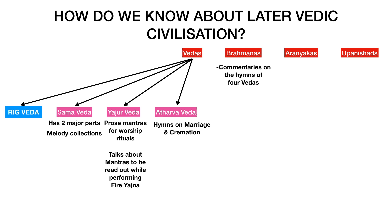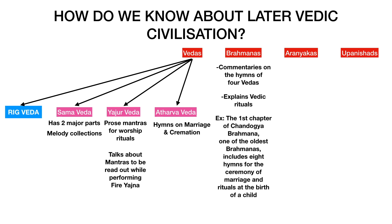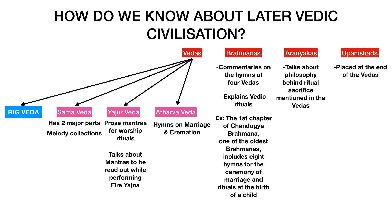Coming to Brahmanas, these contain commentary on the hymns of the Vedas — in short, they explain the Vedic rituals. For example, the first chapter of Chandogya Brahmana, one of the oldest Brahmanas, talks about the ceremony of marriage and rituals at the birth of a child. Aranyakas, on the other hand, talk about the philosophy behind the rituals mentioned in the Vedas. Upanishads are placed at the end of the Vedas, so they are called Vedanta, and contain the philosophy of life. Aranyakas talk about the philosophy of rituals, while Upanishads talk about the philosophy of life.